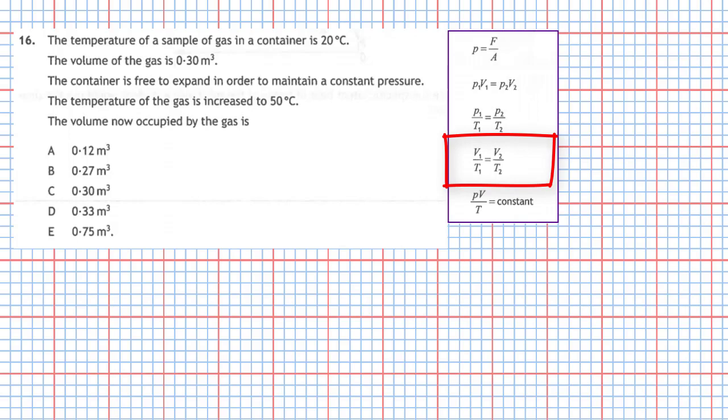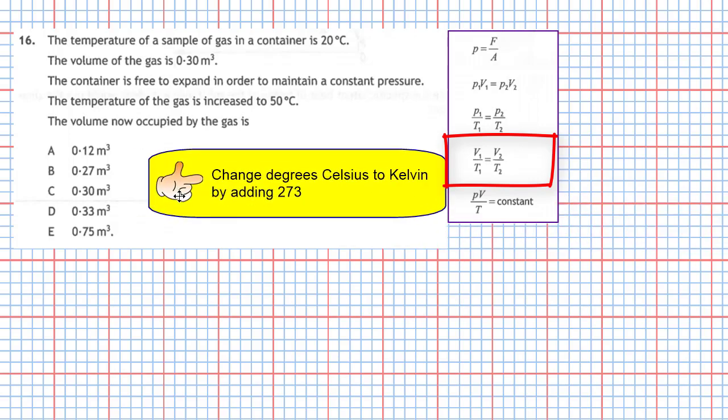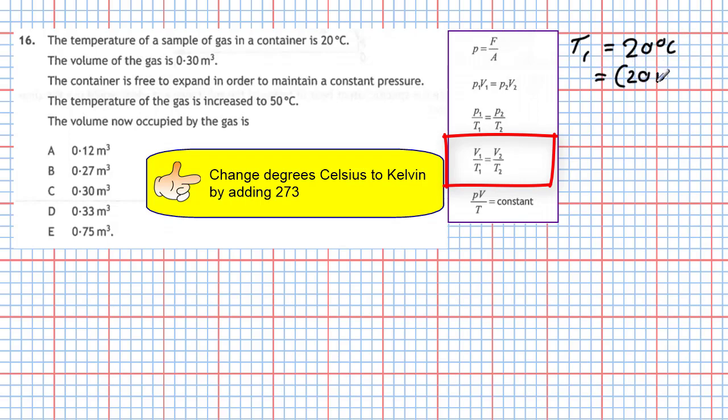But we must remember some other important fact and that is we have to change degrees Celsius to Kelvin by adding 273. These equations only work if the temperature is in Kelvin. So right away I want to change the temperatures into Kelvin. So T1, the initial temperature, is 20 degrees Celsius, so that is going to equal 20 plus 273 Kelvin, which comes out to be 293 Kelvin.